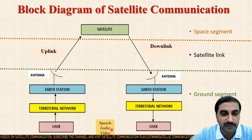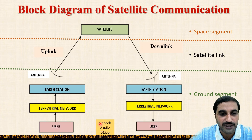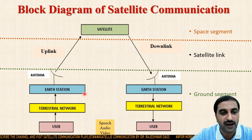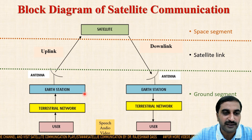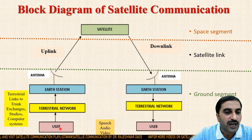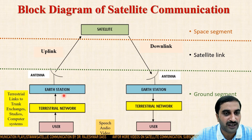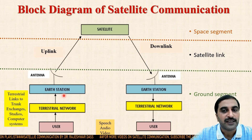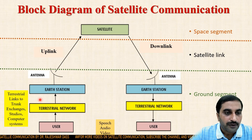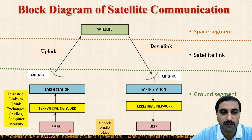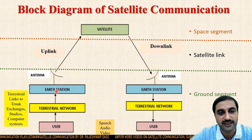Ground segment mein aapka user information transmit kar sakta hai — it may be speech, audio, video, or data. Agar aapka user earth station ke paas hi hai, then there is no need for terrestrial networks. Agar user far away hai from the earth station, then terrestrial networks help the user to transmit information to the transmitting earth station. Terrestrial networks mein basically terrestrial links, trunk exchanges, studios, and computer systems aate hain. Jo bhi information user ko transmit karni hai, vo terrestrial networks ke through transmitting earth station tak aati hai.